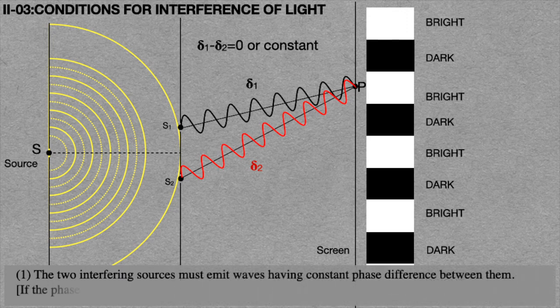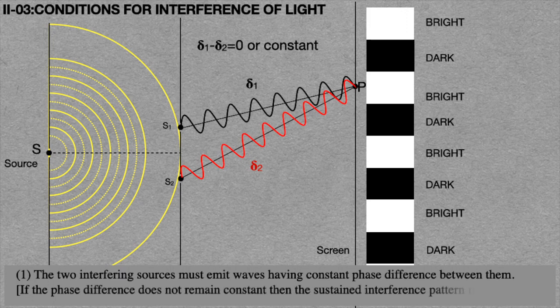If the phase difference does not remain constant, then a sustained interference pattern is not possible.